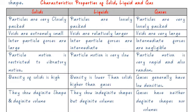Let's discuss the characteristic properties of solid, liquid, and gas. Particles are very closely packed in solids, loosely packed in liquids, and very loosely or freely packed in the gaseous state. Voids are extremely small in solids, relatively larger in liquids, and very large in gases. Inter-particle forces are large in solids, intermediate in liquids, and approach negligible in gases.